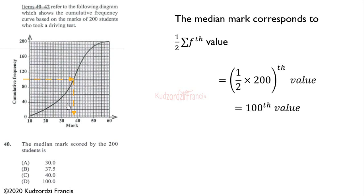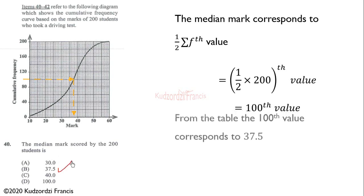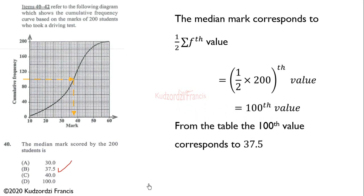We trace the 100 value across to the curve, then trace downwards. Reading off the horizontal axis, that falls on 37.5. Checking the scale: there are 10 boxes in the relevant interval, each box representing 1 unit, so we count 35, 36, 37 — and 37.5 is in the middle. Therefore the correct answer is B; the hundredth value corresponds to a median mark of 37.5.